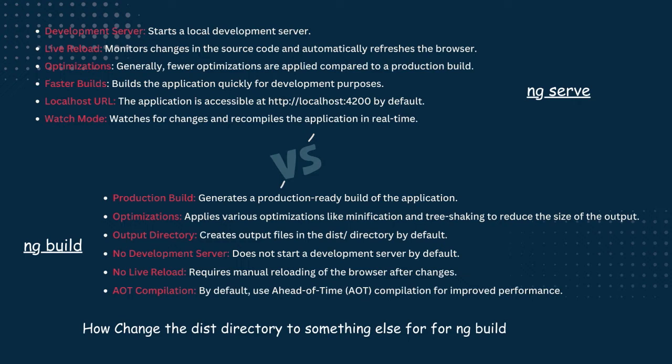If you want to change that dist directory to something else, like your project name, how can you do that? We can do it manually, but I have not tried that. There is an option called 'outputDirectory' in angular.json — if you update that from 'dist' to your project name, it will create that folder while doing 'ng build'. Check your angular.json file to see all the options available there.